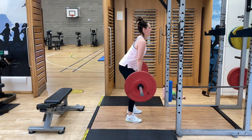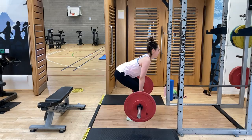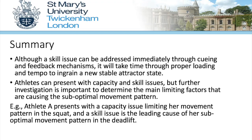Giving evidence that the previous sub-optimal movement strategy was due to a skill issue. In summary: although a skill issue can be addressed immediately through cueing and feedback mechanisms, it will take time through proper loading and tempo to ingrain a new stable attractor state. Athletes can present with both a capacity issue and a skill issue, but further investigation is important to determine the main limiting factors. For example, athlete A presented with a capacity issue limiting her squatting pattern, and a skill issue was the main cause for a sub-optimal movement pattern in the deadlift.